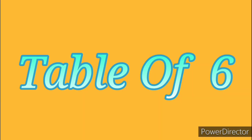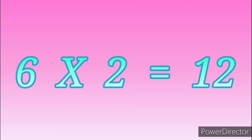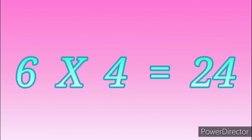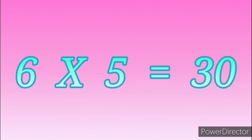Table of Six. 6 ones are 6. 6 twos are 12. 6 threes are 18. 6 fours are 24. 6 fives are 30.